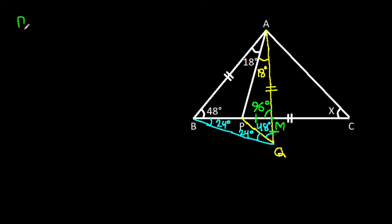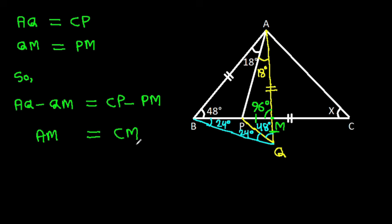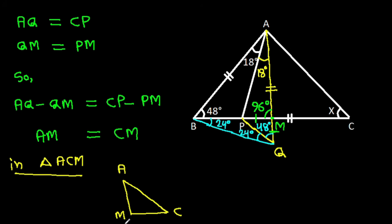Now, we have AQ is equal to CP, and QM is equal to PM. So AQ minus QM is equal to CP minus PM. And AQ minus QM is AM, which is equal to CP minus PM, which is CM. In triangle ACM, we have AM is equal to CM, so these two base angles are equal.